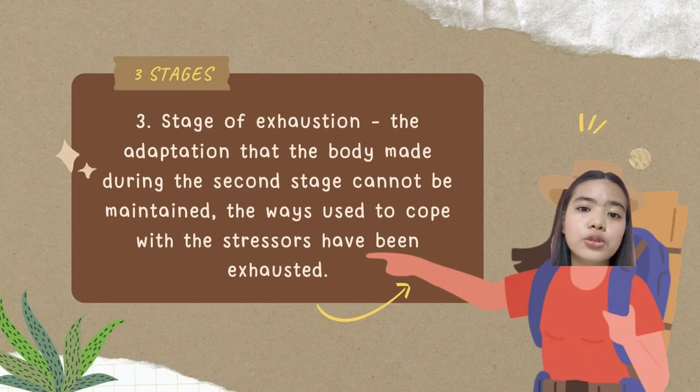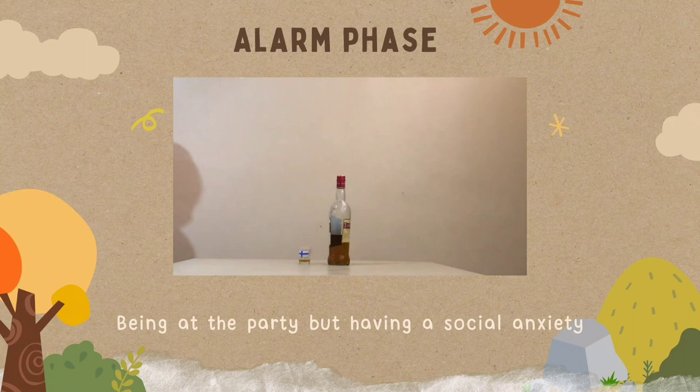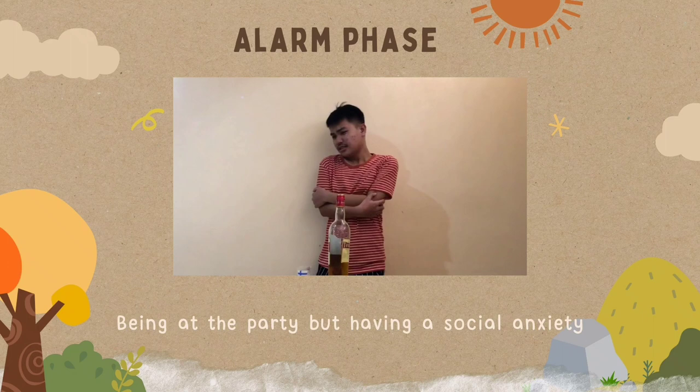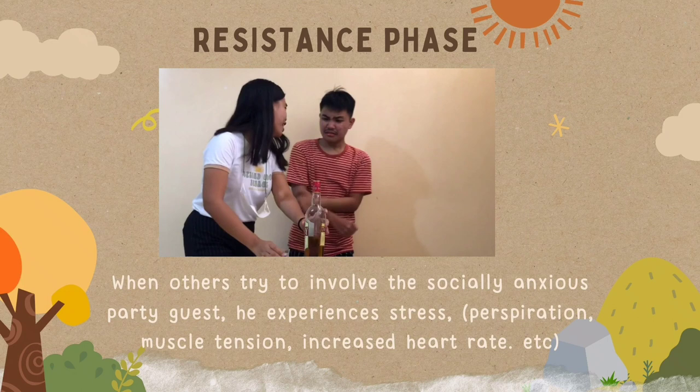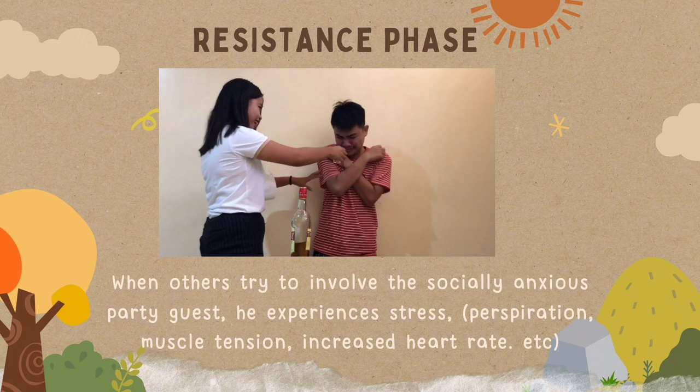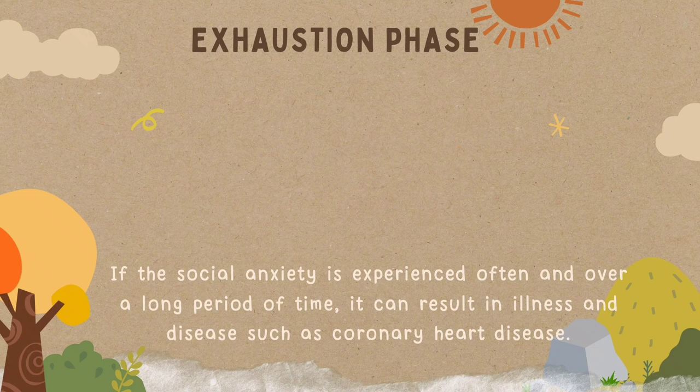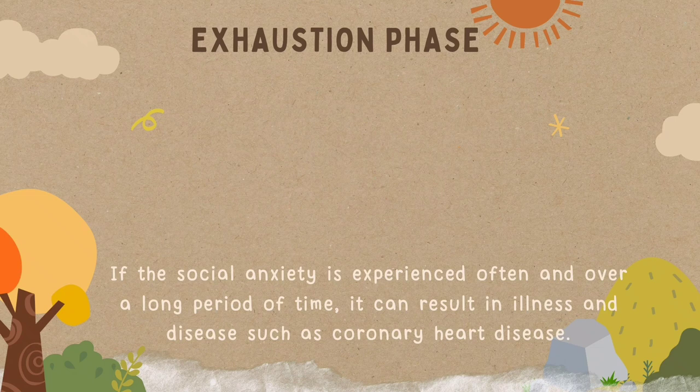For example — alarm phase: being at a party but having social anxiety. When others try to involve the socially anxious person, he experiences stress, perspiration, muscle tension, and increased heart rate. Exhaustion phase: if social anxiety is experienced often and over a long period of time, it can result in illness and disease such as coronary heart disease.